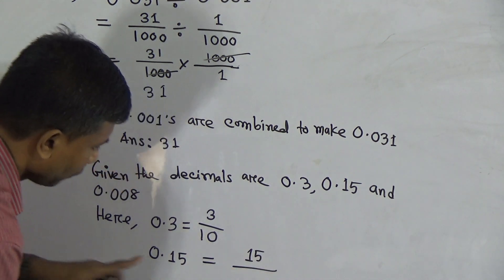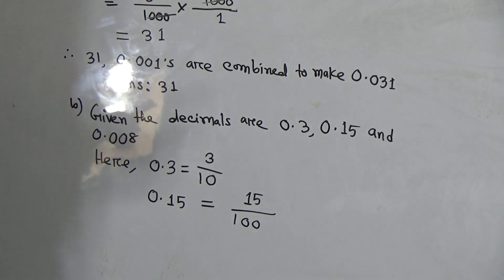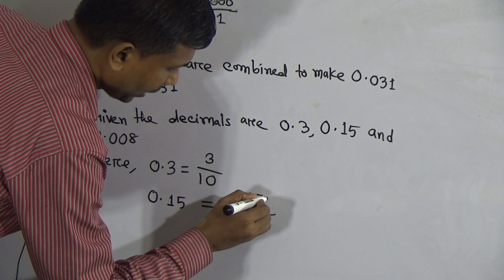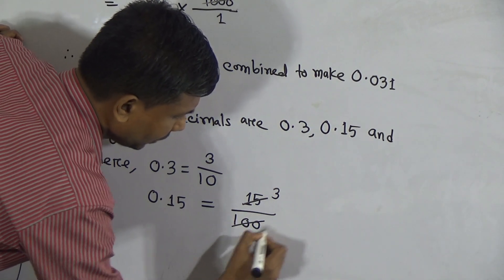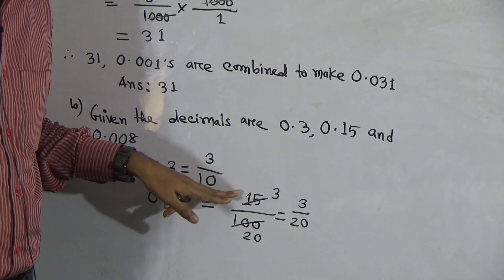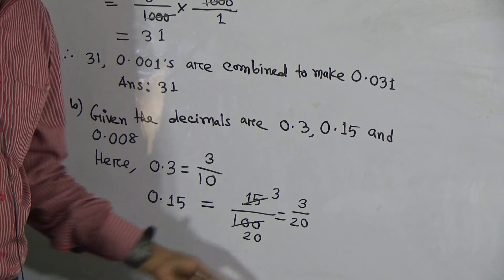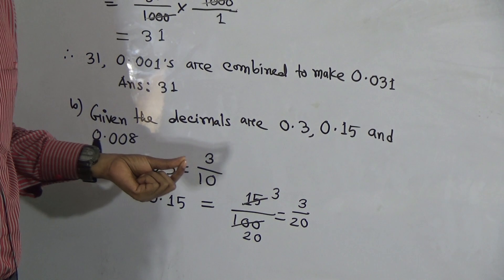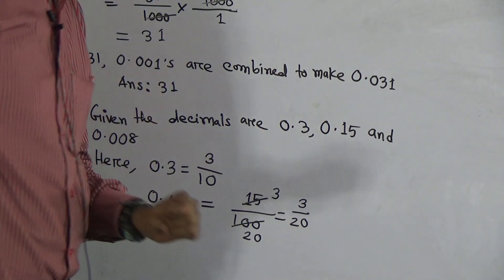For 0.15, that is 15 by 100. We can reduce this — the common factor between 15 and 100 is 5. Divide 15 by 5 to get 3, and divide 100 by 5 to get 20. So 0.15 equals 3 by 20.